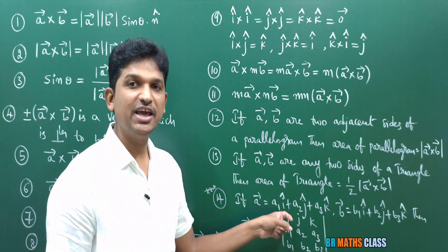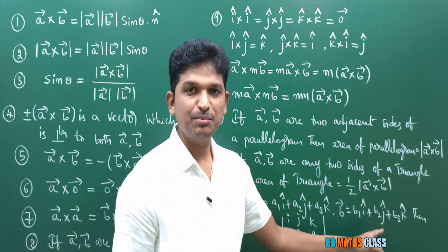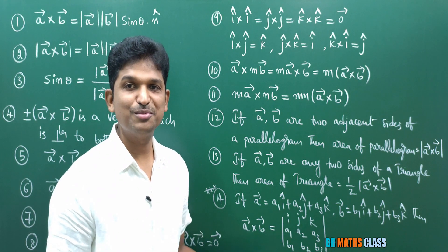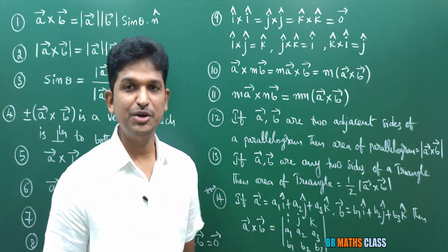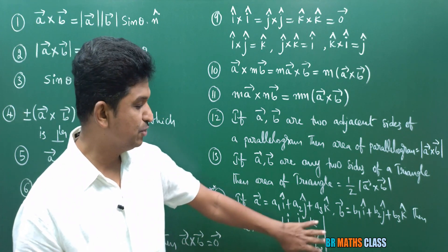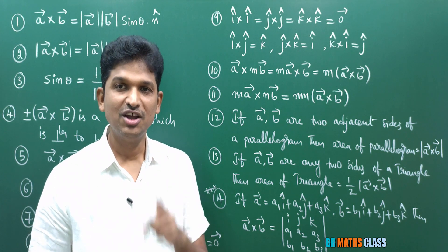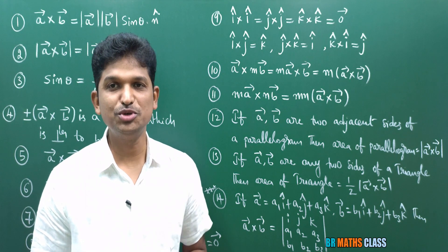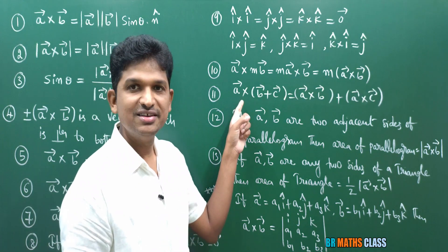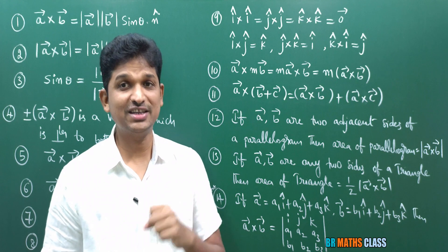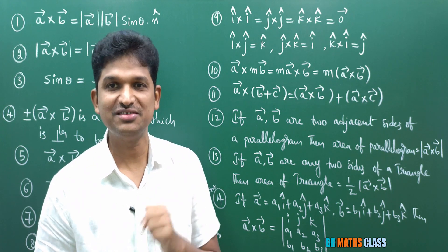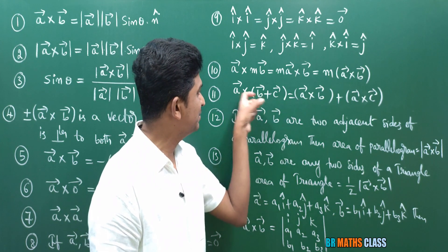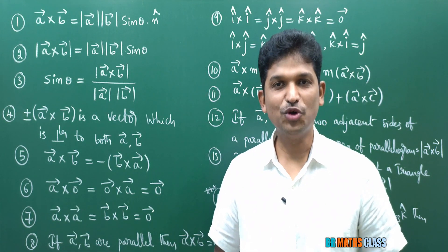Formula 14 — most important and very frequently used: if A bar equals a1 i cap + a2 j cap + a3 k cap and B bar equals b1 i cap + b2 j cap + b3 k cap, then A bar cross B bar is the determinant of the 3×3 matrix with first row [i, j, k], second row [a1, a2, a3], third row [b1, b2, b3]. Also, cross product is distributive over vector addition: A bar cross (B bar + C bar) equals A bar cross B bar plus A bar cross C bar.